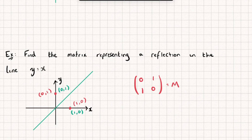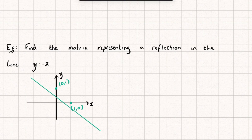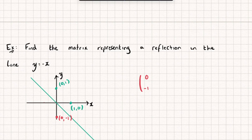Finally, we need to find the matrix representing a reflection in the line y = -x. Mark on our points (1, 0) and (0, 1), then mark on the transformation line y = -x. Under this transformation, the point (1, 0) is going to be mapped to the point (0, -1) — that's the first column of my transformation matrix. The point (0, 1) is going to be mapped to the point (-1, 0), so the second column is (-1, 0). This matrix represents a reflection in the line y = -x.